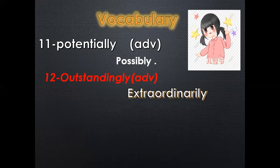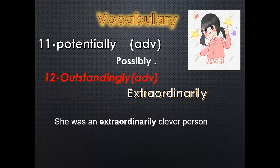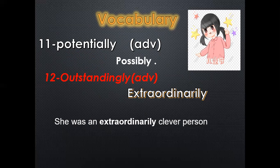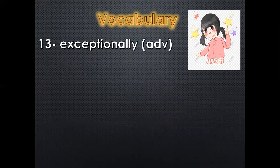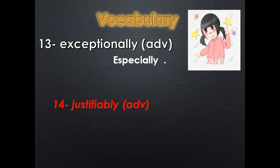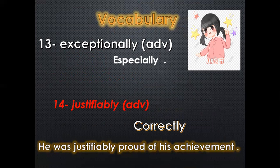Next, 'outstandingly' means extraordinarily. When we say she was an extraordinarily clever person — very, very clever — instead of saying 'very very clever,' we can say outstandingly or extraordinarily. 'Exceptionally' means especially. And 'justifiably' means correctly — when we say he was justifiably proud of his achievement, it means he did something very successful, so he was correctly proud of it.